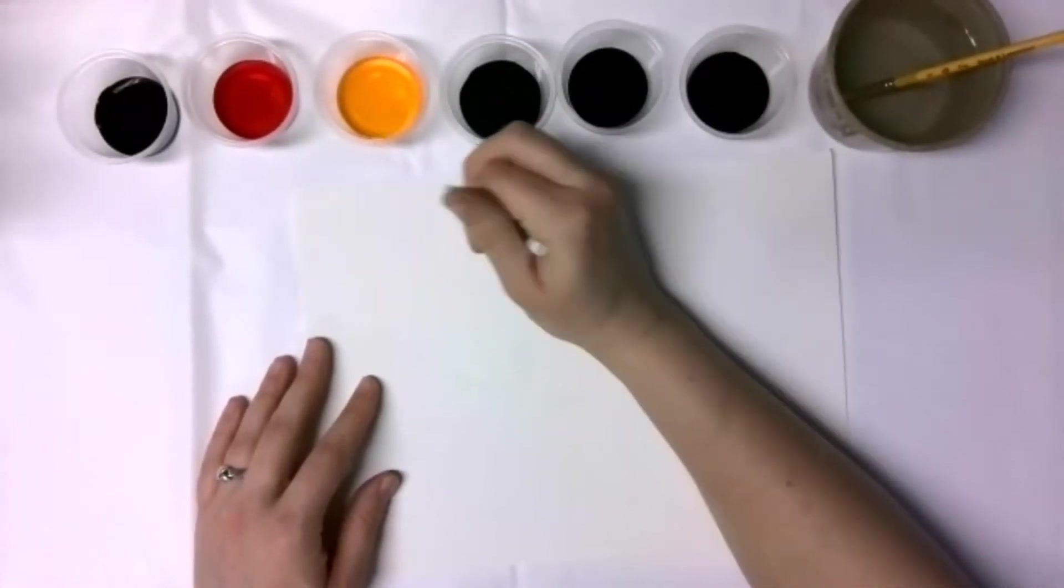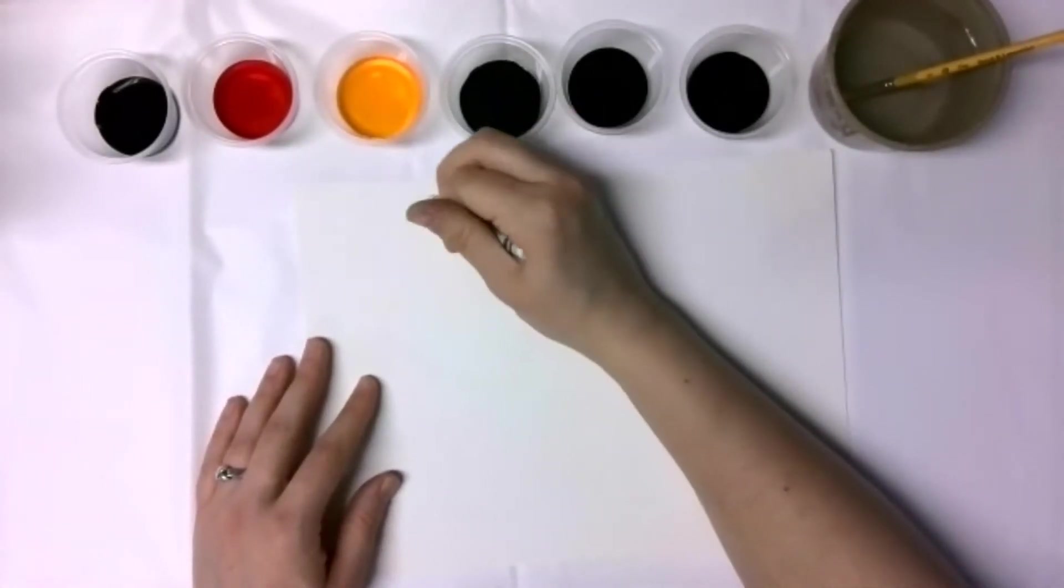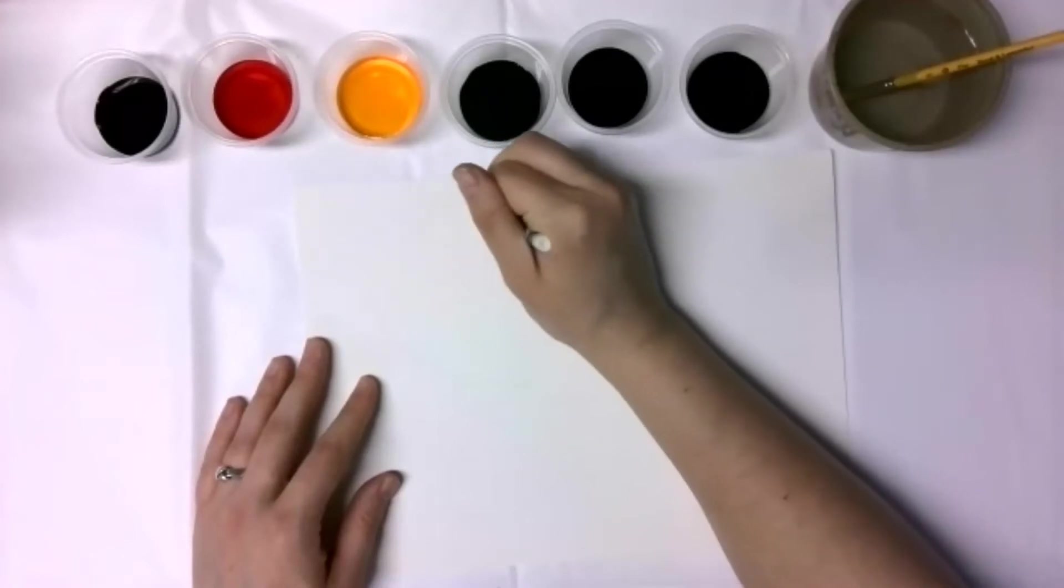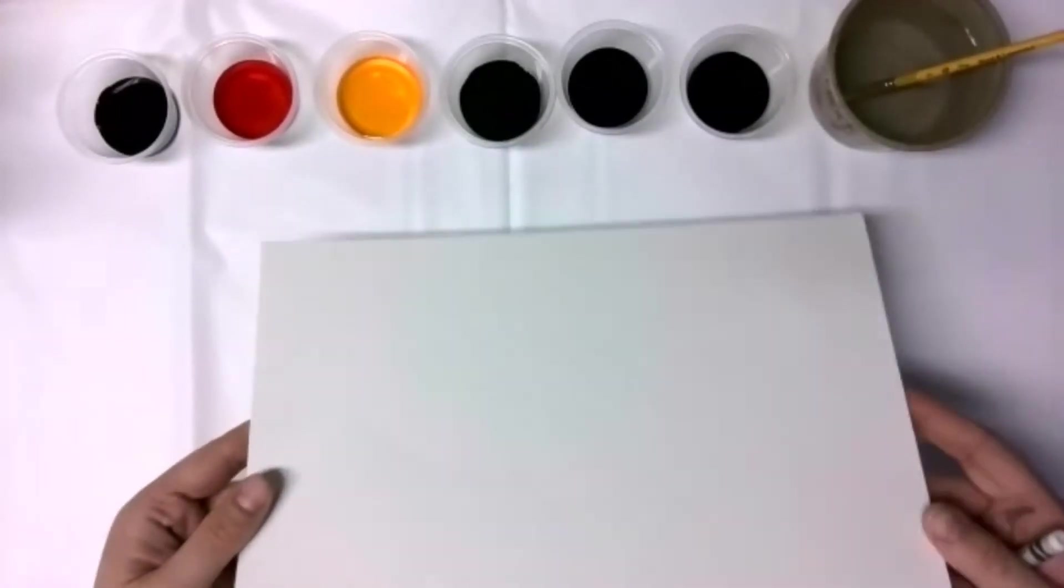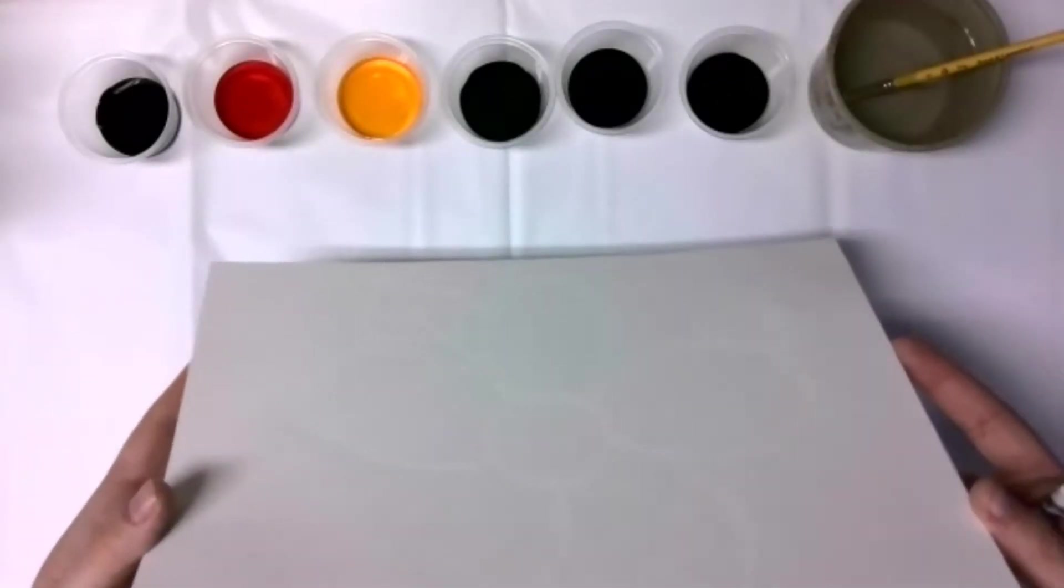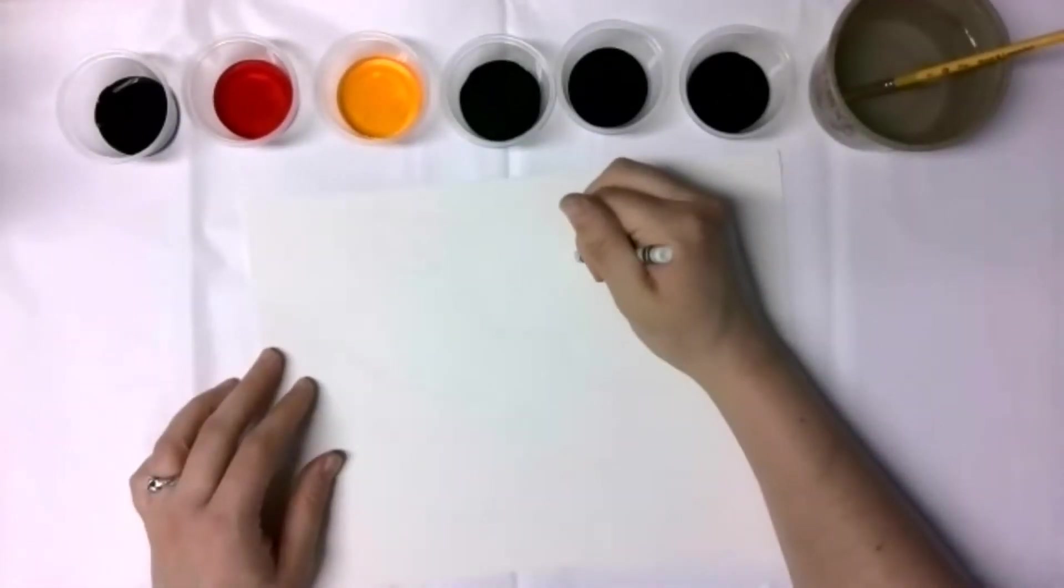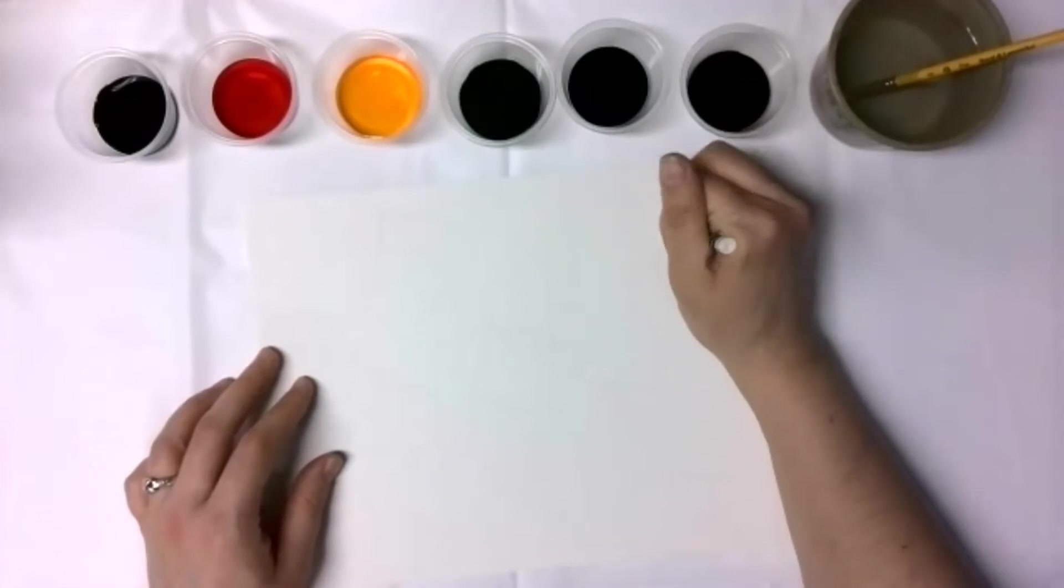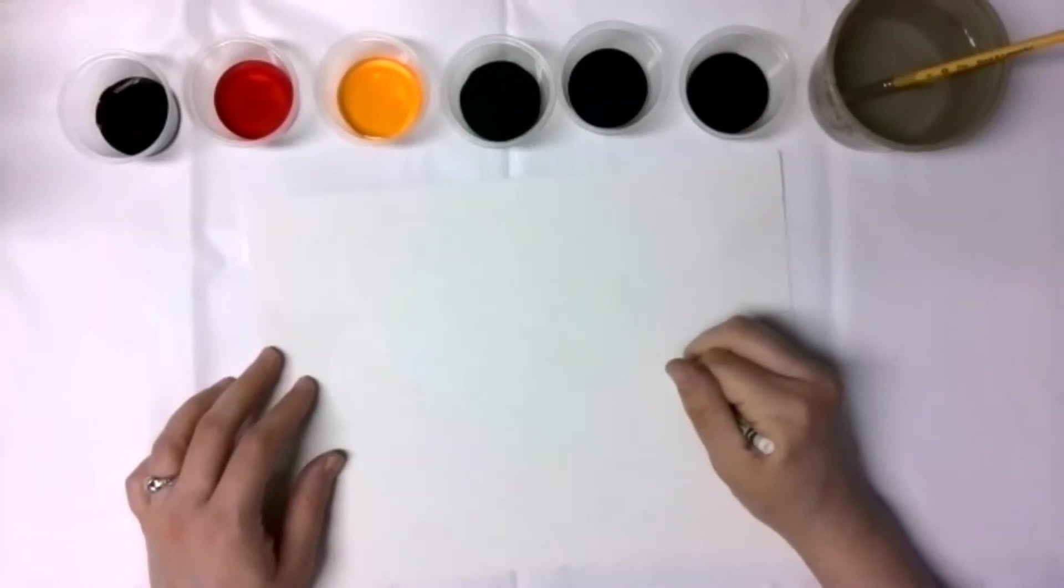I'm going to make some leaves. So if you can tell, there it is. There is the leaf coming off of the flower. So I'm going to do leafs in between each set of petals.